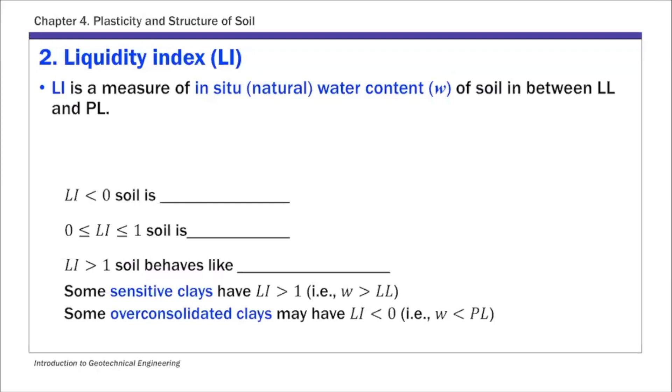LI is defined as: we have the in situ or natural water content W minus plastic limit over LL minus PL. So that's the definition of liquidity index. This W again is the in situ or natural water content.